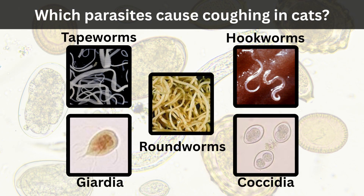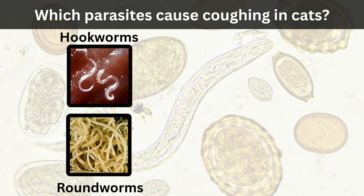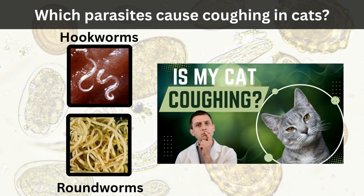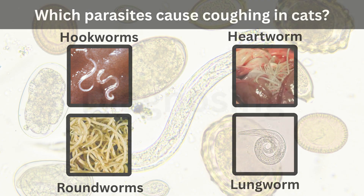I mentioned coughing as a rare symptom — which of these parasites can cause coughing in cats? Roundworms and hookworms can travel to the lung and cause coughing in cats, and these parasites should be considered in a coughing cat, especially a kitten or a cat that spends time outside. Check out my Is My Cat Coughing video to learn more. Two other parasites that can cause coughing in cats are heartworm and lungworm.